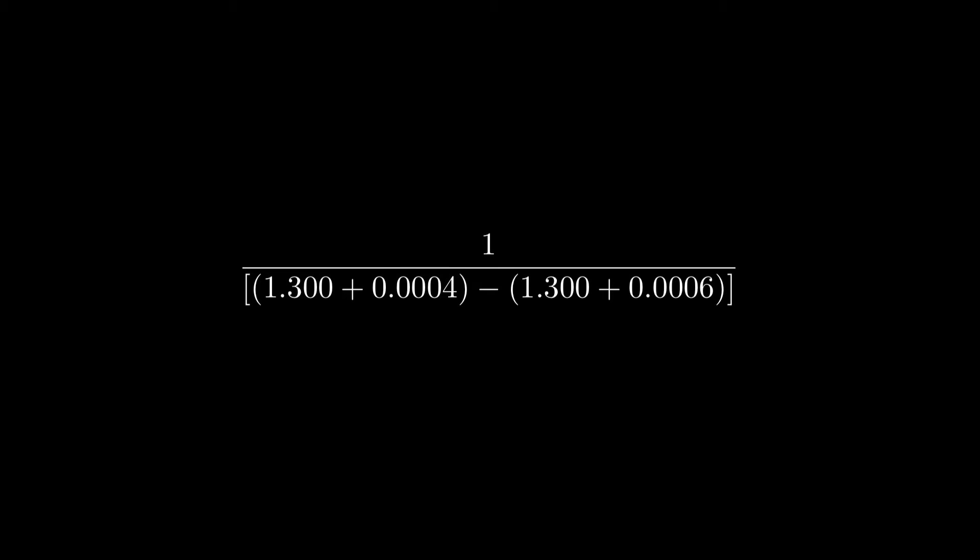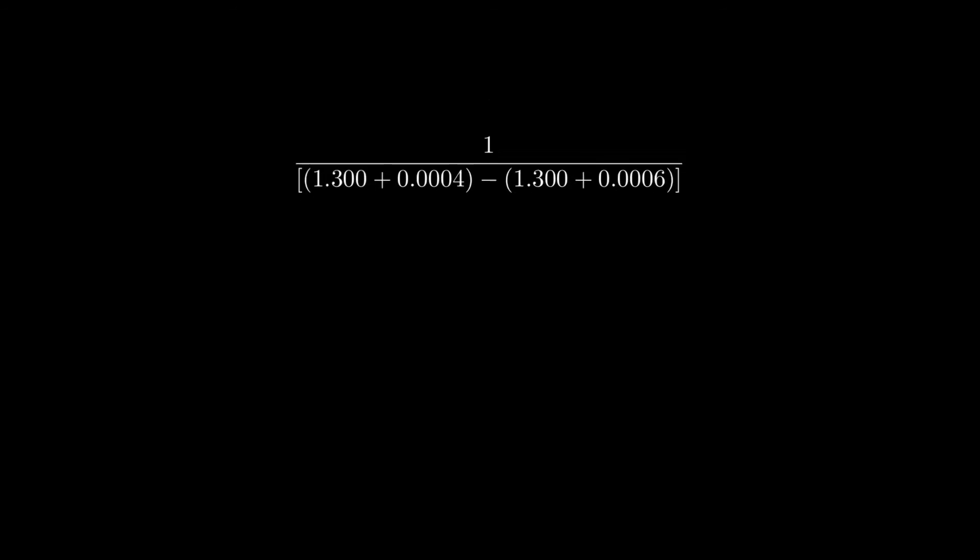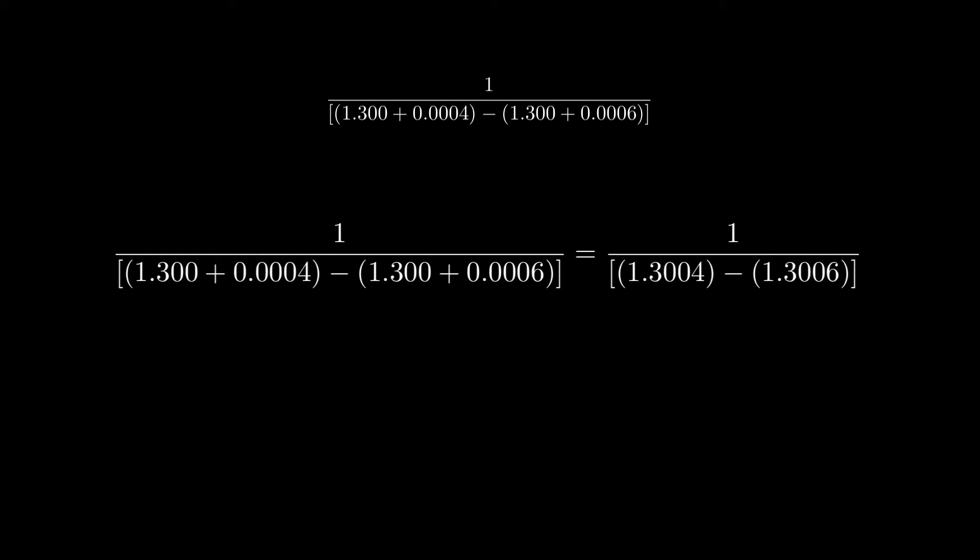For the first question, we need to perform this calculation using standard arithmetic, and then we'll perform this calculation using a calculator that rounds all numbers after calculation to three places to the right of the decimal point. The first step of both of these are the same. We would add these two numbers together and get the following.